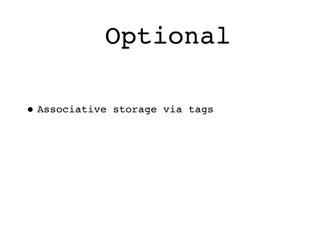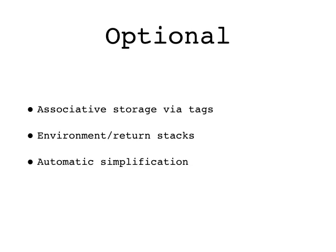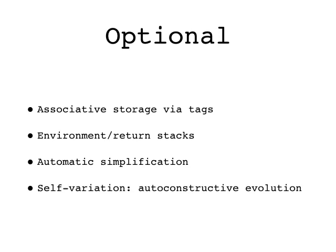I'll briefly mention a few optional features available in some Push implementations. Some include instructions that create associations between names or tags and data items, allowing for non-stack data storage. Some also have instructions for creating local environments in which non-local effects can only be produced with explicit return instructions, involving the addition of stacks for environments and return values. Push makes it easy to simplify programs automatically, for example by repeatedly removing random things and putting them back whenever that breaks something — this usually shrinks evolved programs pretty dramatically, and sometimes even makes them more general. Since Push programs can express operations on other Push programs and on genomes, they can express their own reproduction and variation processes, which is being studied under the name auto-constructive evolution.